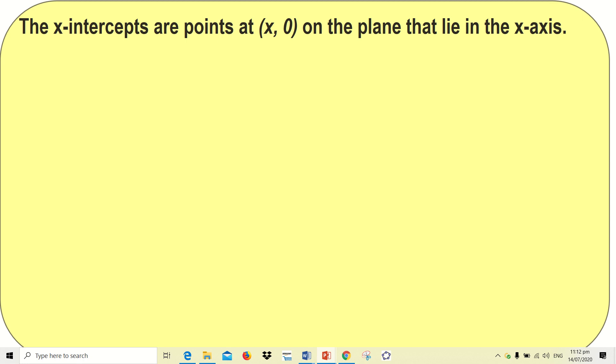We'll now plot the x-intercept. X-intercepts are points at (x, 0) on the plane that lie within the x-axis. We defined what x-intercept means: x-intercepts are points that are found within your x-axis. So your x is any number on your x-axis while your y becomes 0.